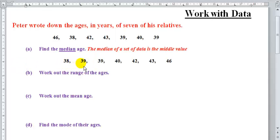And the middle value in this case, to get the middle value, all you need to do is rewrite the data. When you rewrite the data, you end up with 38, 39, 39, 40, 42, 43, and 46. So to find the median, all you need to do is count the numbers: one, two, three, four, five, six, seven. So we all know that 40 is the middle value.